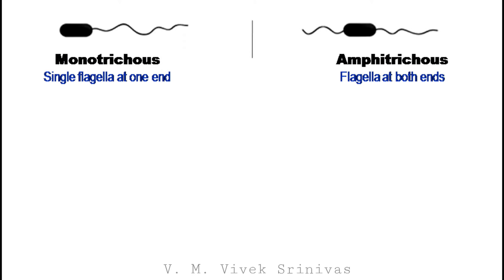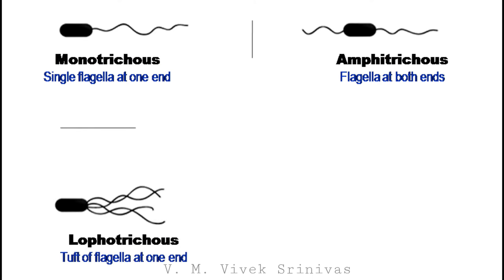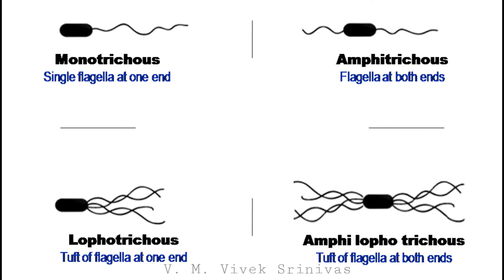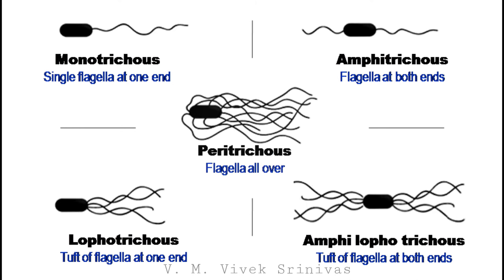If a single flagellum is present at one end, they are called monotrichous. If a single flagellum is present at both ends, they are called amphitrichous. If a tuft of flagella is present at one end, they are called lophotrichous. If a tuft of flagella is present at both ends, they are called amphilophotrichous. If flagella are present all over the bacteria, they are called peritrichous.